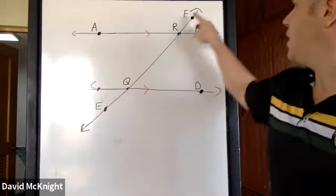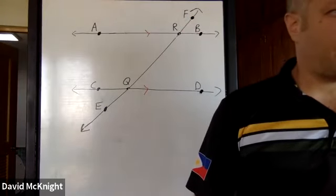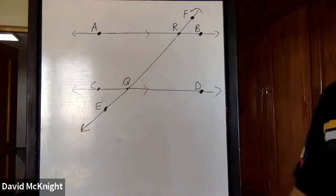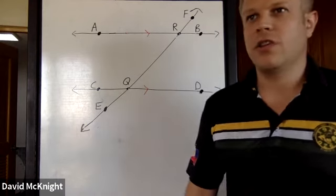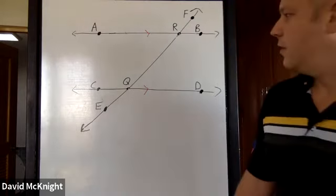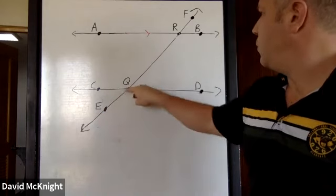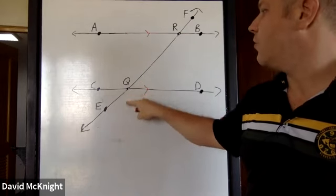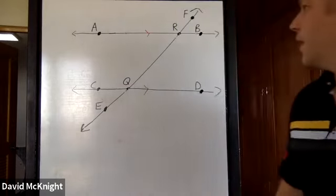Angle CQE and angle FRB are also alternate exterior angles and are congruent. Now let's talk about supplementary angles. Supplementary angles are any pair of angles that have a sum of 180 degrees. A linear pair, for example angle EQD and angle DQR, forms a straight line which sums to 180 degrees — so a linear pair is also called supplementary.